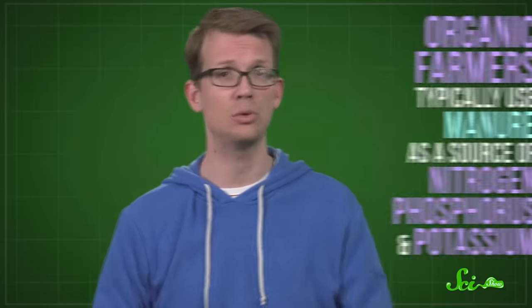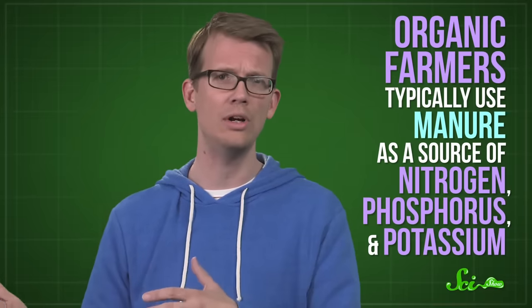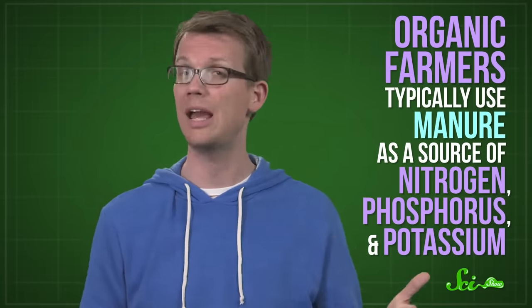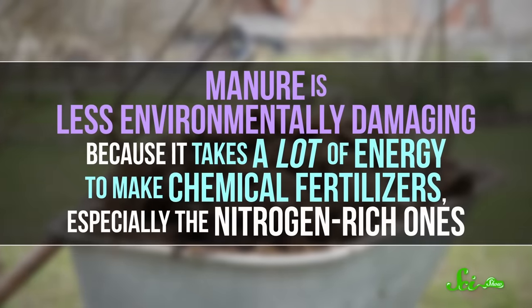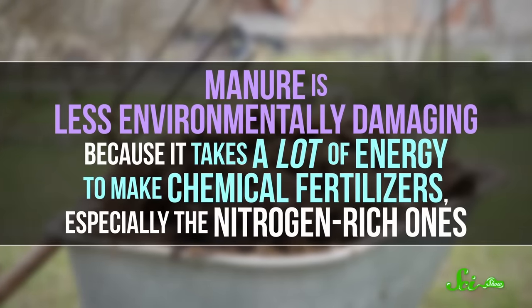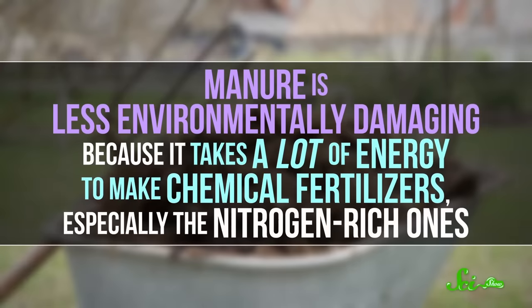Now, the whole idea of organic food is to be easier on the planet. And in many ways, organic food does that. No chemical fertilizers means organic farmers typically use manure as a source of nitrogen, phosphorus, and potassium. Plants need these nutrients to grow, to make amino acids, DNA, and cell membranes, for example. And normal soil doesn't have enough to support crop-level growth, hence fertilizer. Manure is less environmentally damaging because it takes a lot of energy to make chemical fertilizers, especially the nitrogen-rich ones.